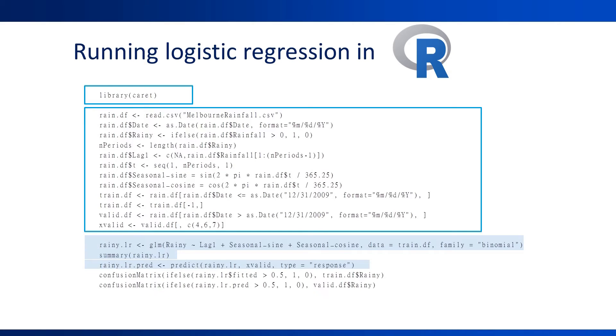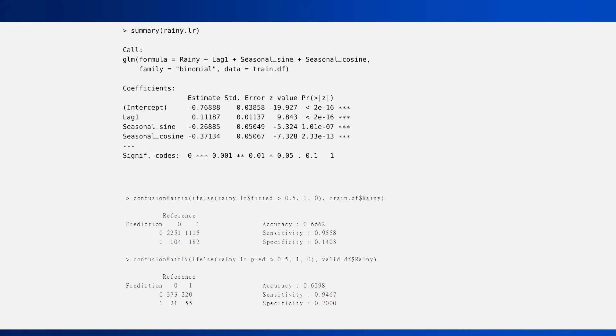Then, we can generate forecasts for the validation period using the predict function. Finally, we can generate the classification matrix, also called a confusion matrix, for each of the training and validation periods using these two lines of code. Here are the results from running the R code. The top displays the estimated logistic model and its coefficients. The bottom displays the classification matrices for the training and validation periods.